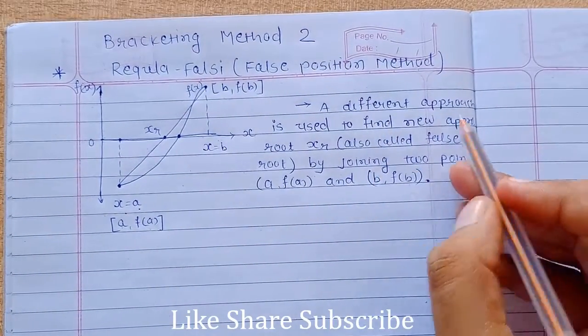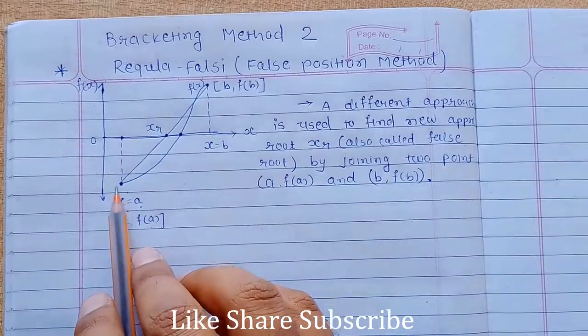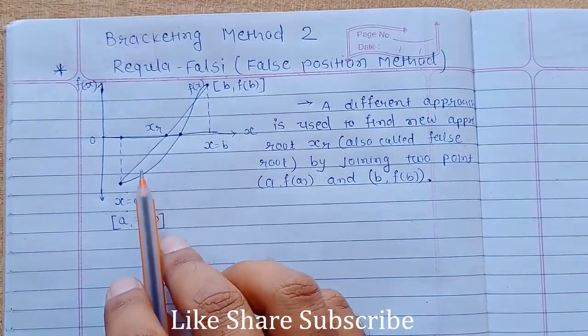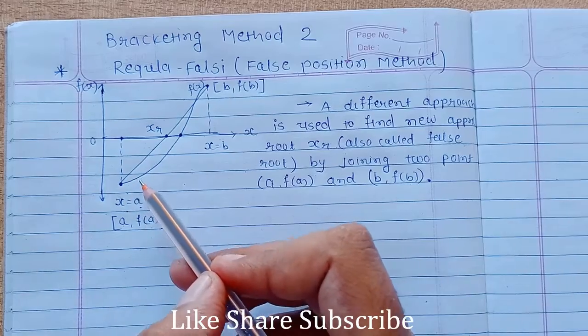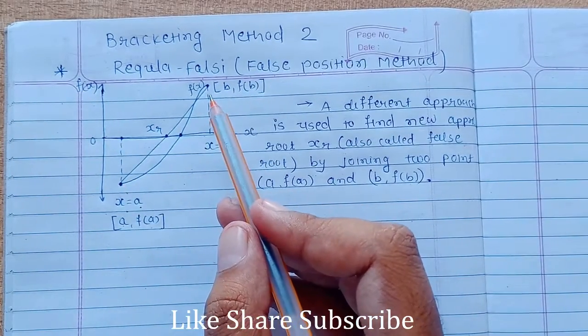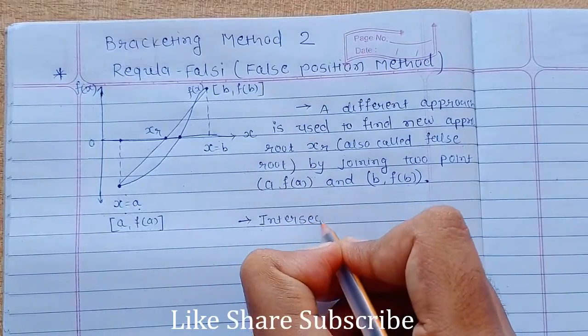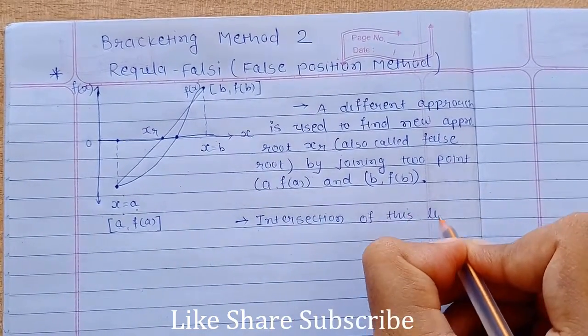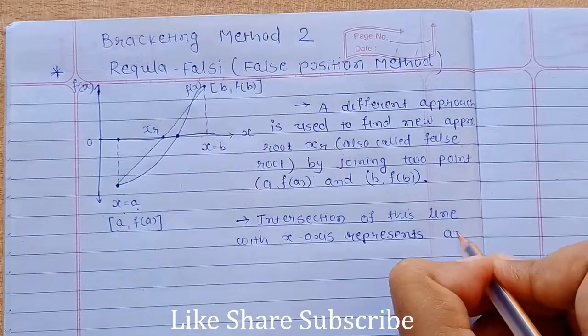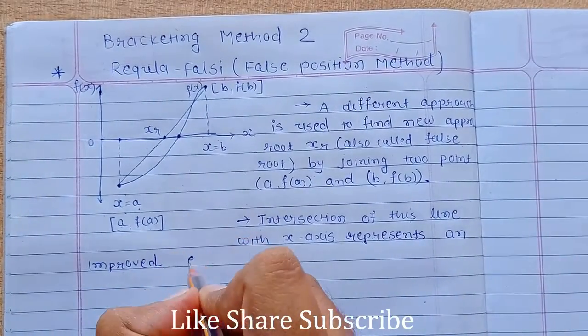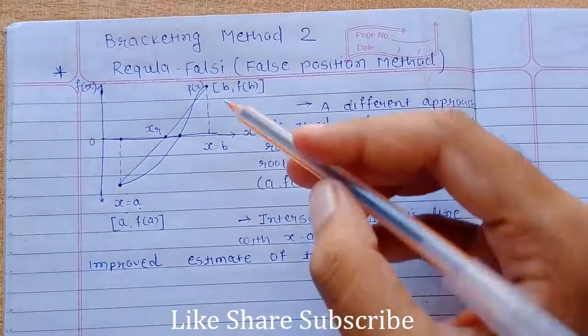So a little bit different approach is used to find a new approximate root xr, also known as false root, by joining these two points a, f of a and b, f of b. One of the conditions for bracketing root is the multiplication of f of a into f of b should be less than 0. So the intersection of this line,